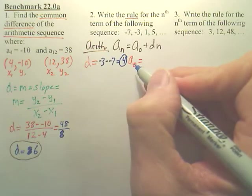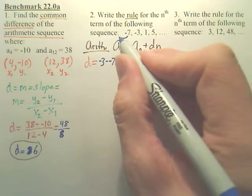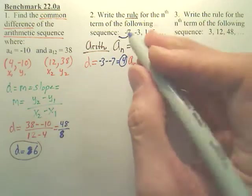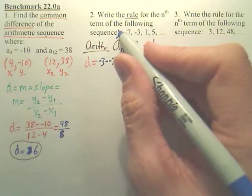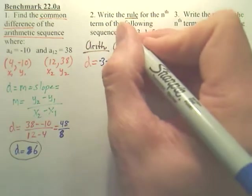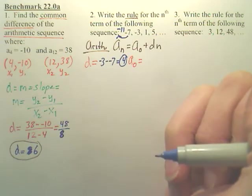Now, the 0 term is the term before the first term. So if I want to go one step back, how do you find that? Well, if I'm adding 4 this way, aren't I subtracting 4 this way? So won't that be negative 11? One step back.